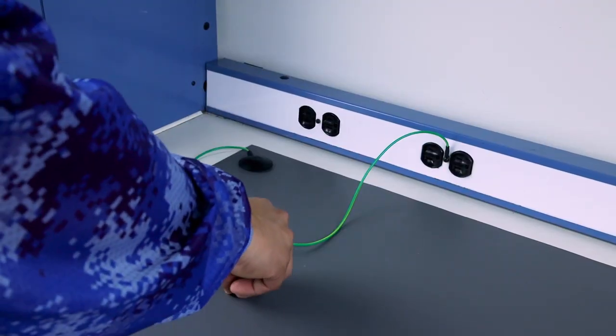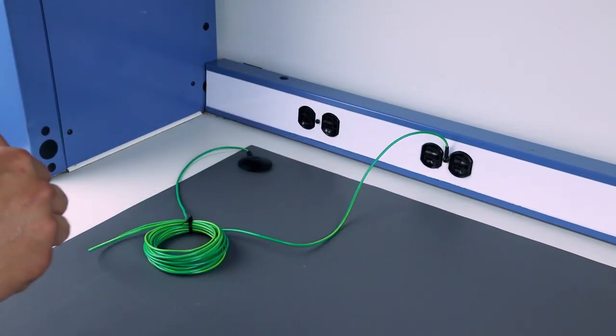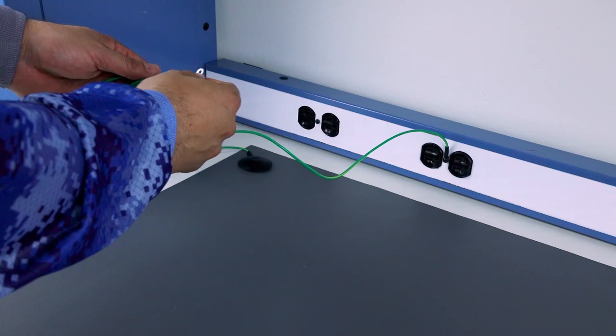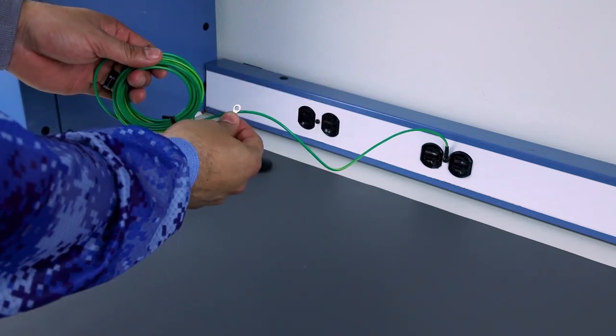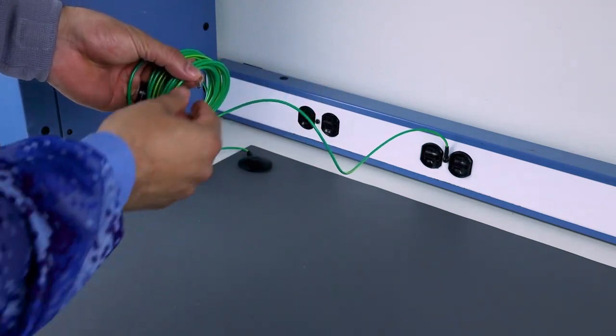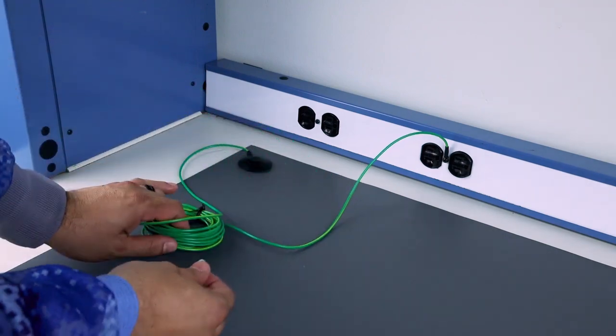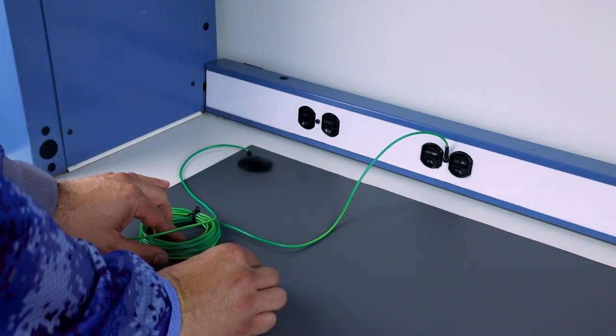In the event that you need to shorten your ground cord, you can cut the cord and reinstall the ring terminal onto the cord, adjust the length that you need it to be, and then go ahead and ground it back onto your work bench.